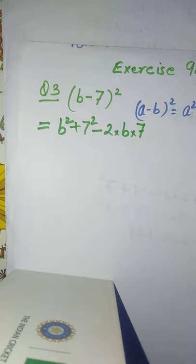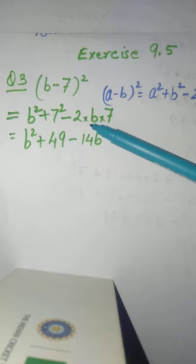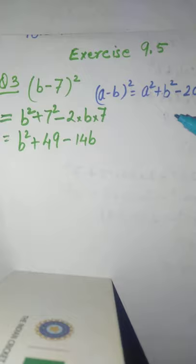Now 7 square is 49, and 2 into 7 is 14, so this expression becomes b square plus 49 minus 14b. You can also write the middle term in between, as the same formula: (a - b) whole square equals a square minus 2ab plus b square.